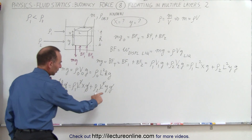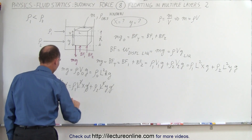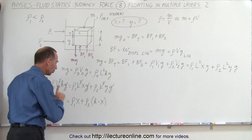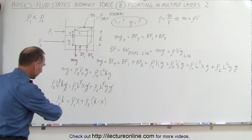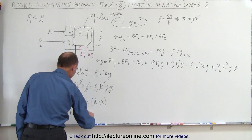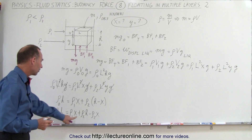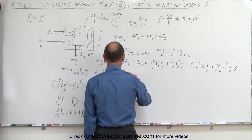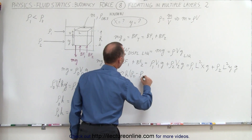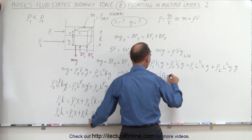Now, if we want to solve this for x, we need to get rid of y. And y can be written as h minus x. So now we have: density of the object times h equals density of layer 1 times x plus density of layer 2 times (h minus x). Expanding the parentheses: density of object times h equals density 1 times x plus density 2 times h minus density 2 times x. Moving terms, we factor out h on the left and x on the right: h times (density of object minus density 2) equals x times (density 1 minus density 2).